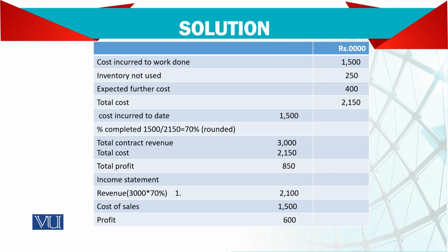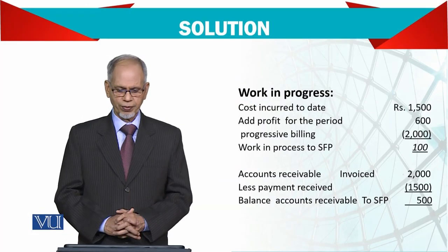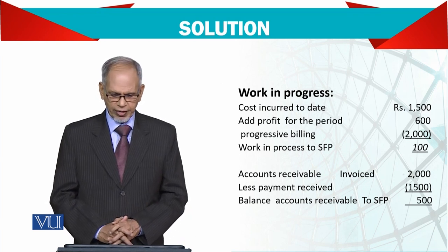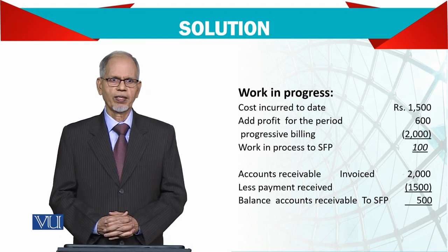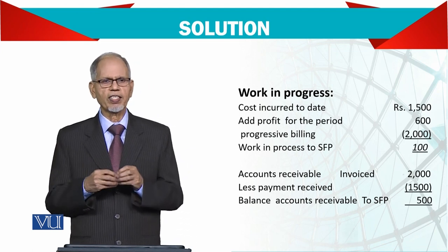In the income statement, you take 70% of the 3 million revenue. The cost incurred is 1.5 million, so your profit becomes 600,000. Note this is tentative, not exact, because we calculated it using a percentage. When the contract is complete, you never know — there could be a loss or profit — but up to this stage there is a profit.